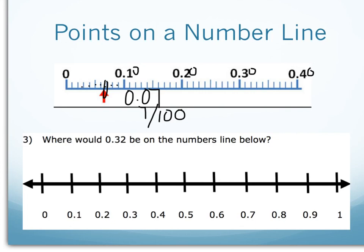Where would you find thirty-two hundredths on this number line? My number line is counting in tenths, so I can add the zero to show it counting in hundredths. Thirty-two hundredths is going to come in between three and four tenths, but closer to three tenths, for thirty-two hundredths.